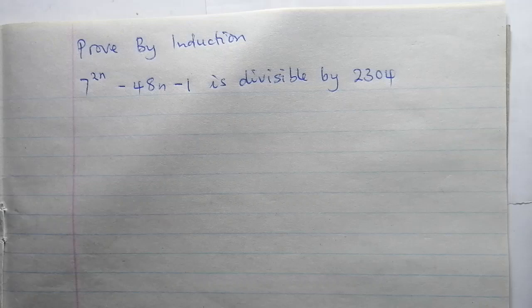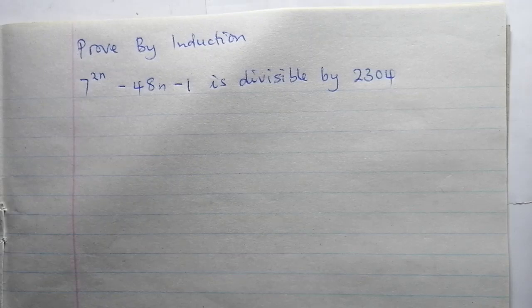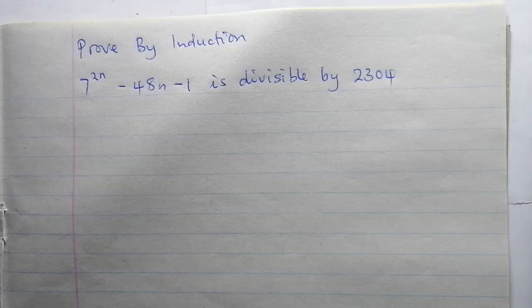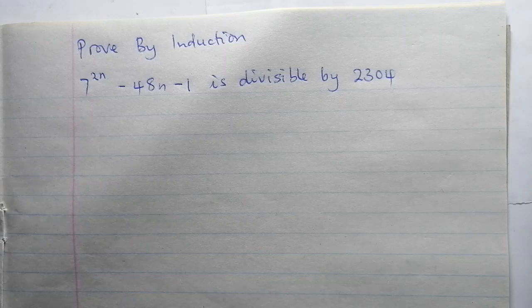Hi guys, welcome to my channel. Today we are on proof by induction, specifically the divisibility kind of proof by induction. If you are given an expression and you want to prove that it is divisible by a certain number — today I have this question: prove by induction that 7 to the power 2n minus 48n minus 1 is divisible by 2304.